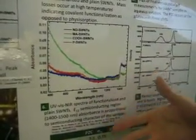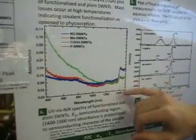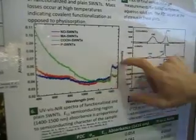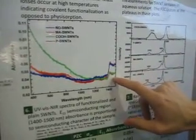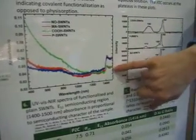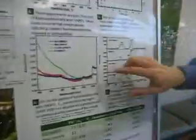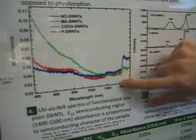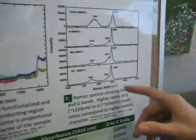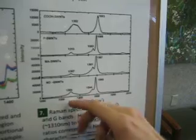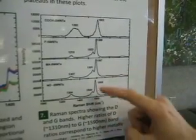To track the semiconducting character of these samples, we also ran ultraviolet-visible near-IR spectroscopy, which shows an interesting feature called the E11 semiconducting region. This is so called because the absorbance in this region is proportional to the amount of semiconducting character in the nanotube sample. We do see a large difference that has occurred among the functionalized groups, so it does seem that there are changes in semiconducting character caused by functionalization. We also see in the Raman spectra another way to track semiconducting character by taking the integrated peak area of the D band and taking the ratio of the integrated peak area of the G band.